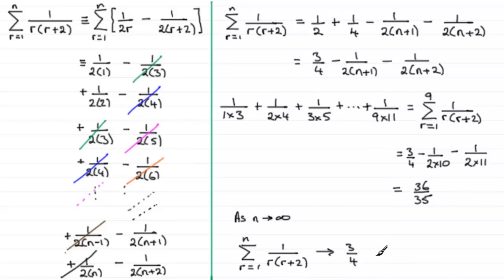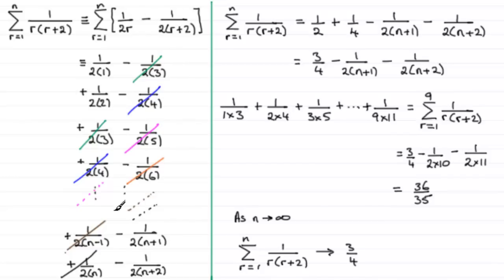So there's the difference method. In questions like this, the leading step will be to split into partial fractions. Once you've done that, let r equal 1 and write down your terms, then r equals 2 directly underneath, then r equals 3, and so on until you see the cancellation pattern emerge. This only works when you have a minus difference between your terms — that's why it's called the difference method. Once you've found the pattern and identified the remaining terms, you can apply the result to find specific sums or sums to infinity.